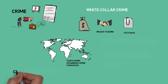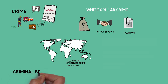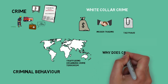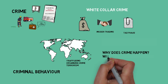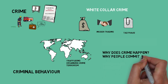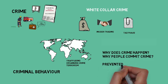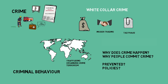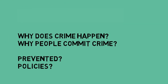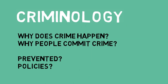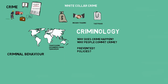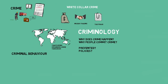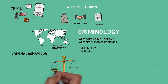In our world, people experience and often talk about crime and criminal behavior. But why does crime happen? Why do people commit crime? How can crime be prevented? And what policies will help control crime? These are central questions in Criminology, the branch of social science concerned with the study of crime, criminal behavior, and the justice system and institutions.